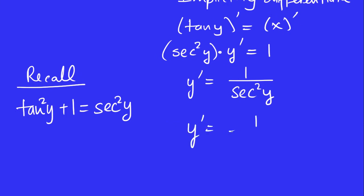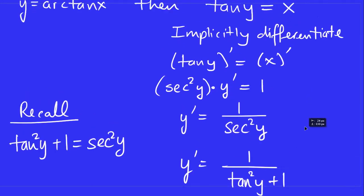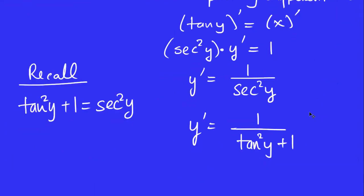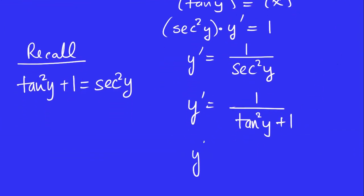I'm going to write 1 over secant squared y is really tan squared y plus 1, according to that identity I just wrote. But remember that tan y is just x, right? So y prime is 1 over tan y is x, so tan squared y is x squared plus 1. And that's exactly what we wanted to show. So that's the justification for that formula, and it wasn't too hard to prove.